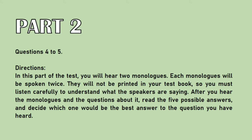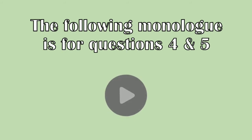Part 2. Questions 4 to 5. Directions: In this part of the test, you will hear two monologues. Each monologue will be spoken twice. They will not be printed in your test book, so you must listen carefully to understand what the speakers are saying. After you hear the monologues and the questions about them, read the five possible answers, and decide which one would be the best answer to the question you have heard. The following monologue is for questions 4 and 5.